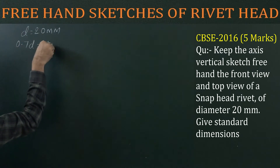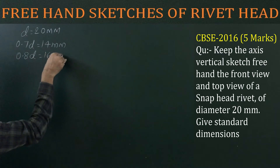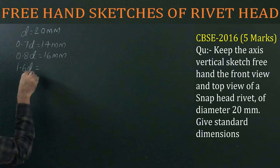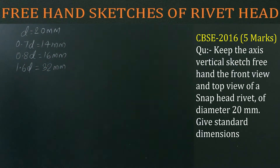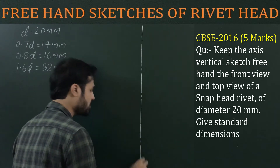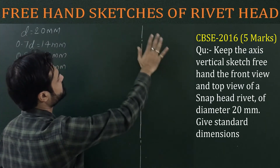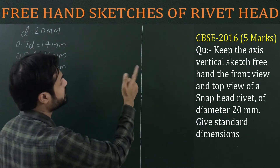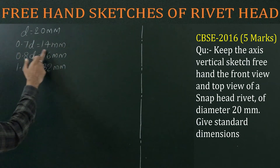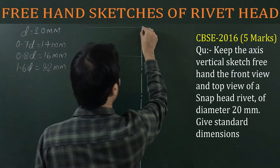The diameter of the rivet is given as 20 mm and we have to calculate all standard dimensions for D = 20 mm. So 0.7D = 14 mm, 0.8D = 16 mm, and 1.6D = 32 mm. These are all standard dimensions for the construction of the snap head rivet. The first condition is that the axis of the rivet is vertical. So first draw a vertical axis line for the rivet, then we have to draw its front view and top view, starting from the front view.